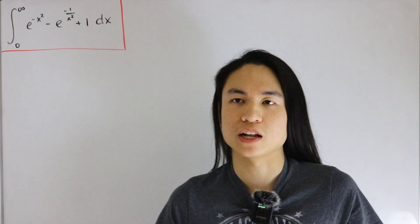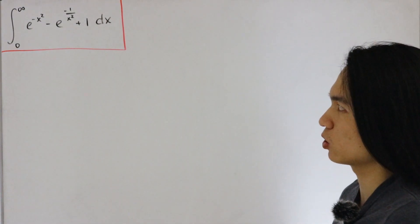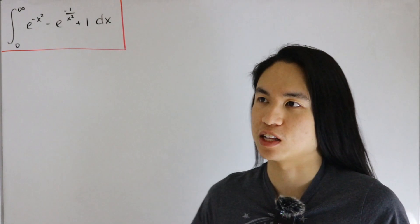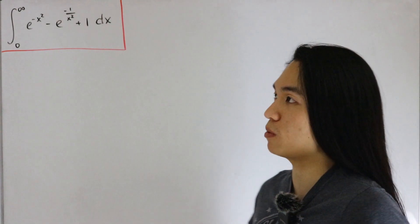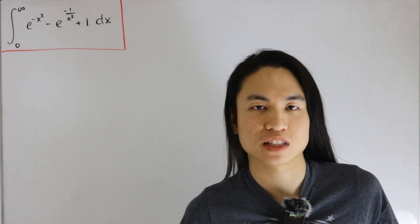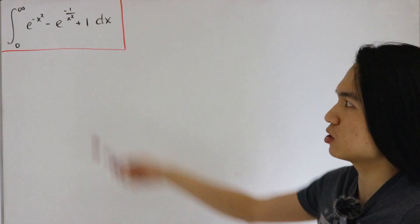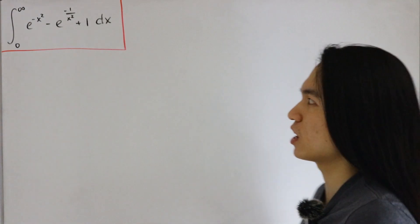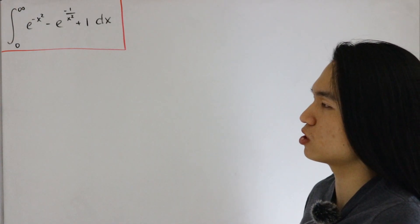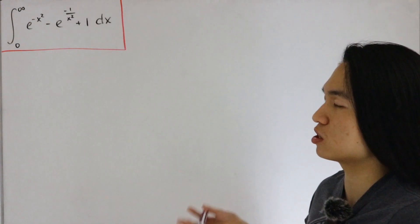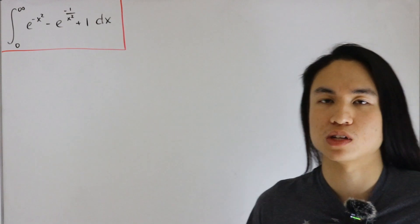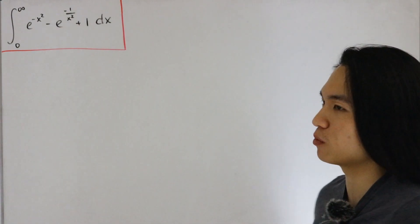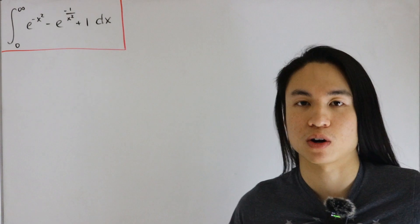You'll notice something pretty clear off the bat. We have e to the negative x squared, and if we take the integral of that over the improper real line, we know that is indeed the Gaussian integral. And because we have a minus and plus, a strategy we can utilize is to split this up into a sum of integrals using the properties of linearity. That lets us justify that we already know a part of the answer.